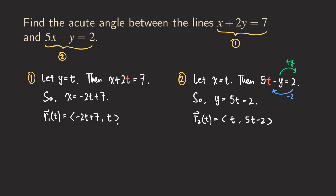Now I have the vector equation for line 1 and the vector equation for line 2. To find the angle between the two lines, I just need the direction vectors. Looking at the coefficients of t: for line 1, the coefficient of t is negative 2 for x and 1 for y, so v1 is (negative 2, 1). For line 2, the coefficient of t is 1 for x and 5 for y, so v2 is (1, 5).